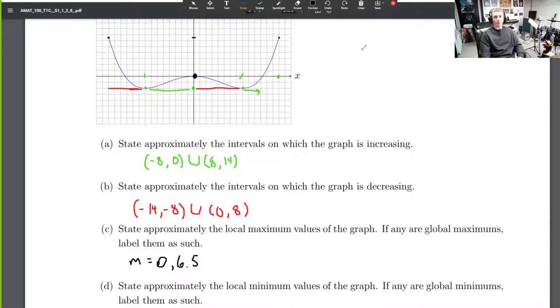So there's two maximum values. Those two are globals. So I'm going to label them up here. We've got a global here and here. Two global maximums. And then we've got a local here. It says to label them as such for the globals. So I didn't need to label the local maximum value. But there we go.